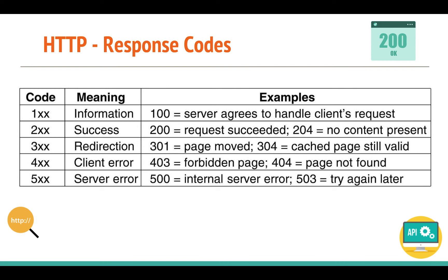Let's move on to HTTP response codes. Whenever you make a request, HTTP works in a request-response manner, and response codes tell you whether your request was successful. The 100 series means the server agrees to handle the request. The 200 series means success — for example, 204 means no content but it was a successful request. The 300 and 400 series relate to redirections and client errors, and 500 series errors indicate a problem on the server.